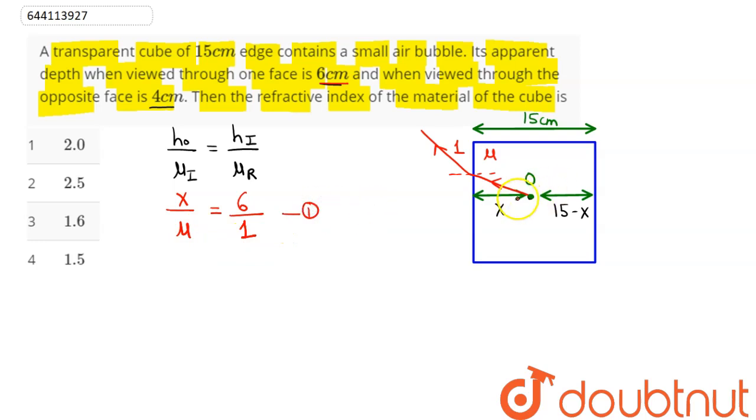Coming to second equation, coming from this side, we can say this is our refractive index mu to 1, object height as 15 minus x divided by refractive index of incident ray as mu.